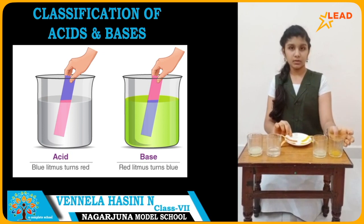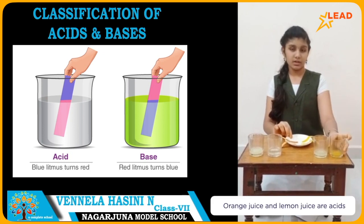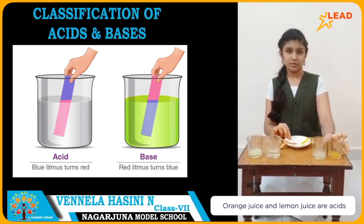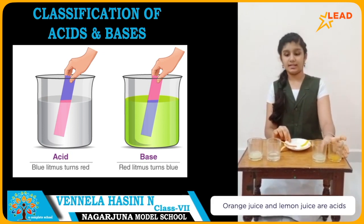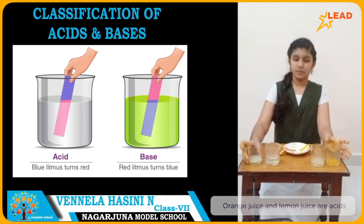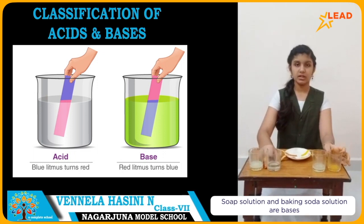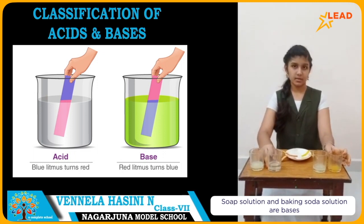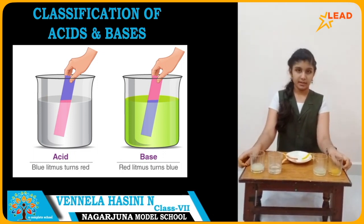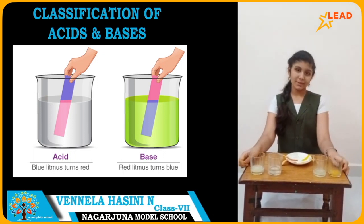So we can conclude that orange juice and lemon juice are acids, and soap solution and baking soda solution are bases. Hope you understood the activity. Bye-bye.